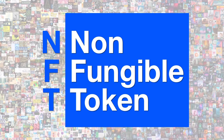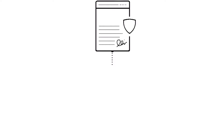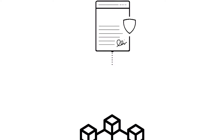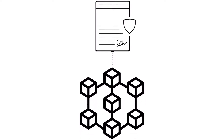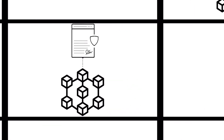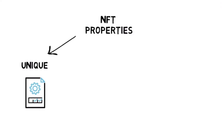A non-fungible token, or NFT, is a unique digital certificate stored on a blockchain. Blockchain is a foundational technology underlying cryptocurrencies like Bitcoin and Ethereum. Similar to these cryptocurrencies, NFTs provide proof of ownership and are easily transferable. But unlike cryptocurrencies, NFTs are unique and non-fungible.